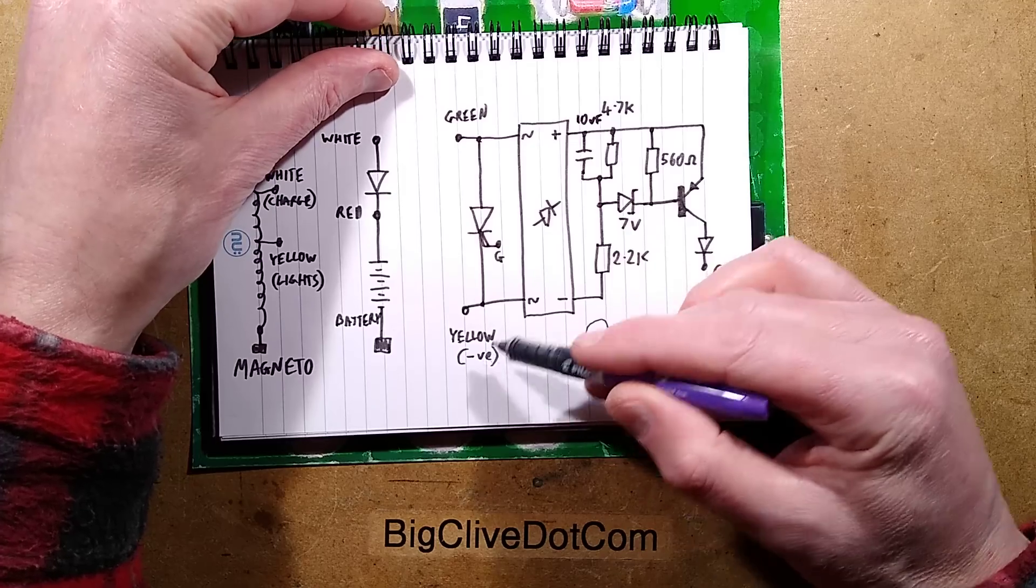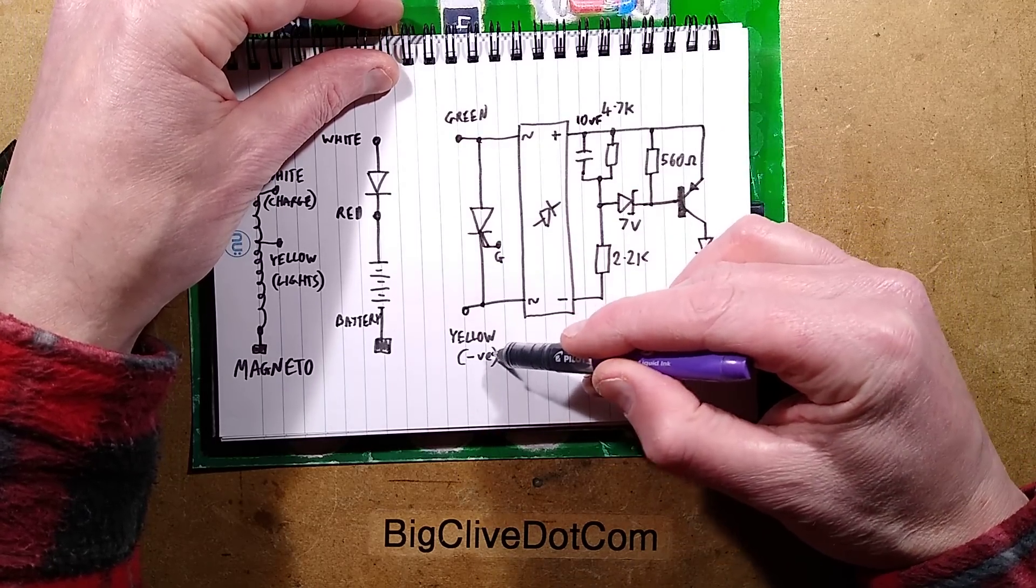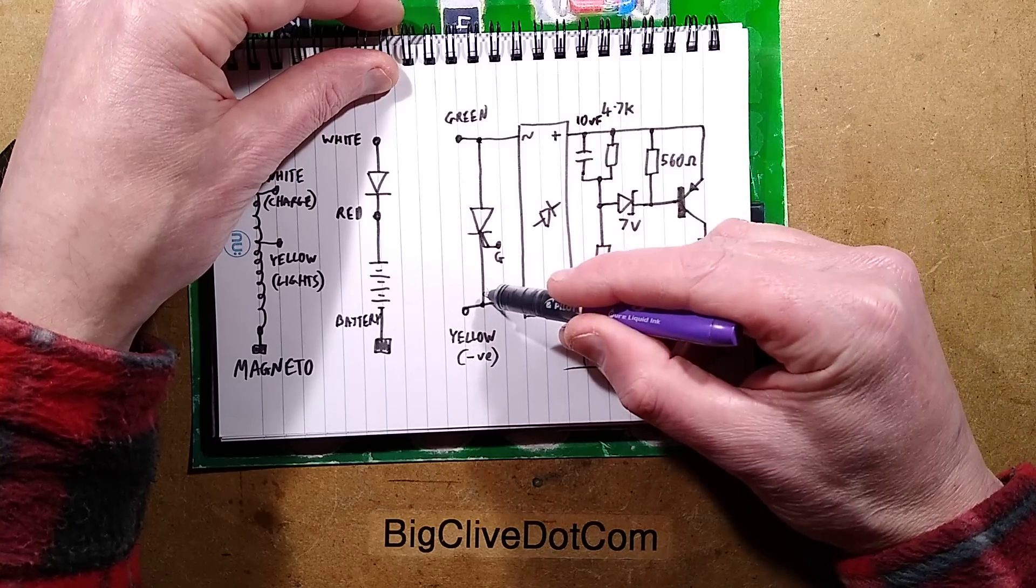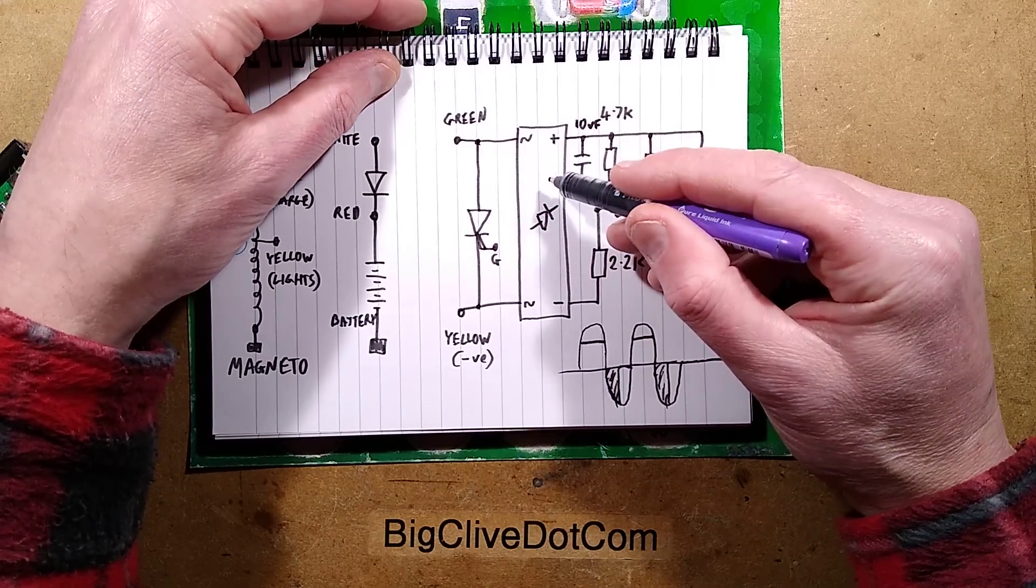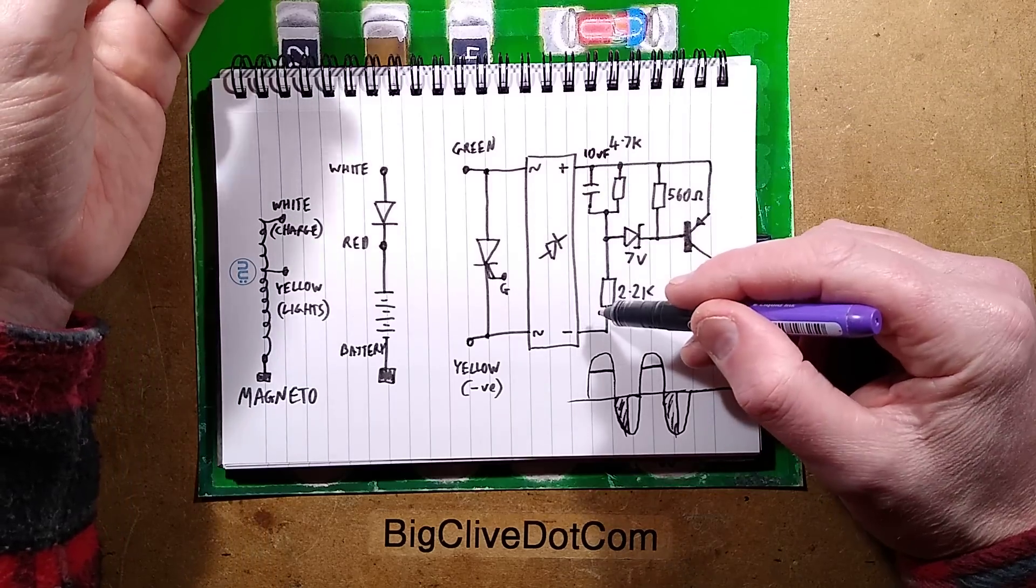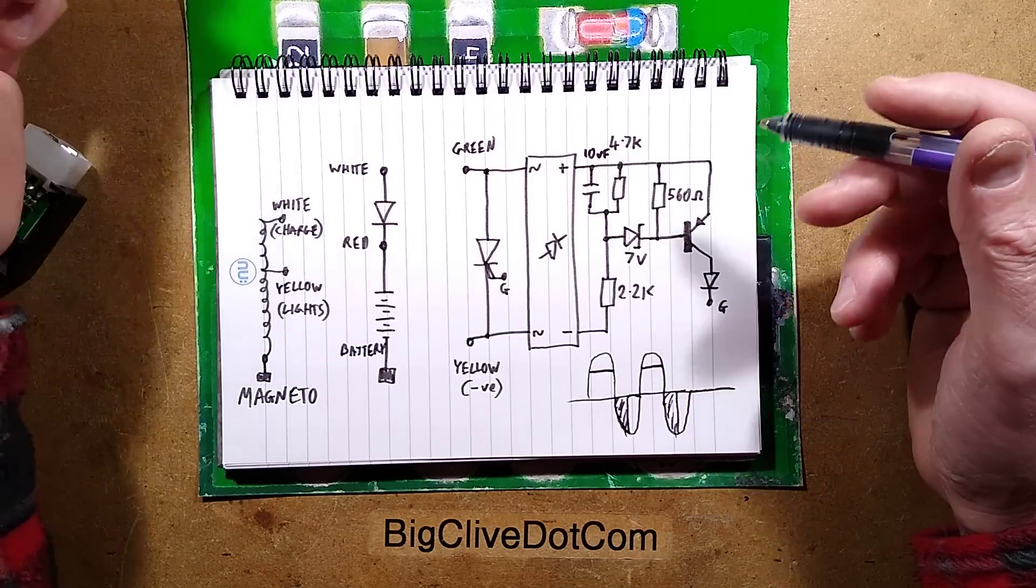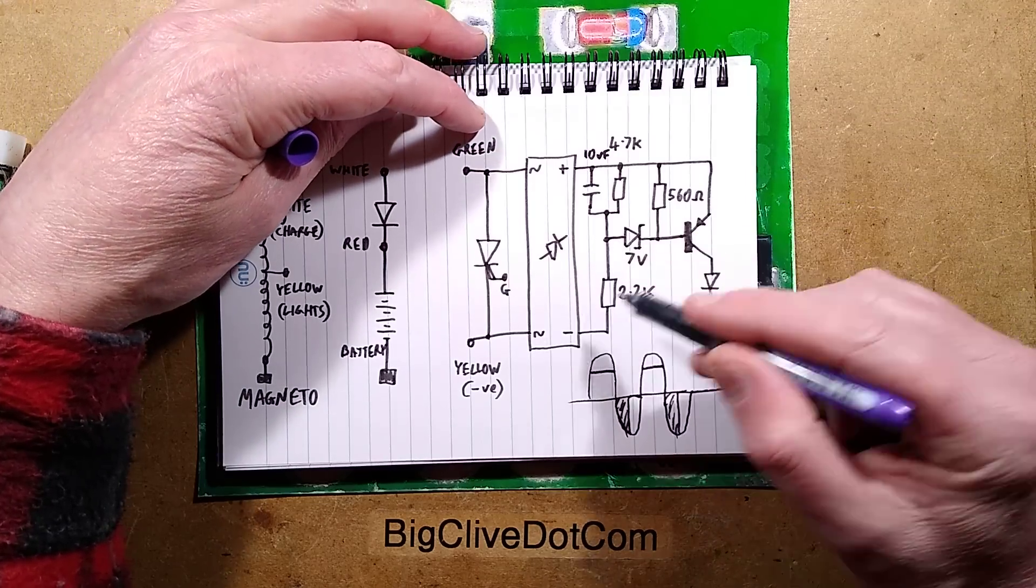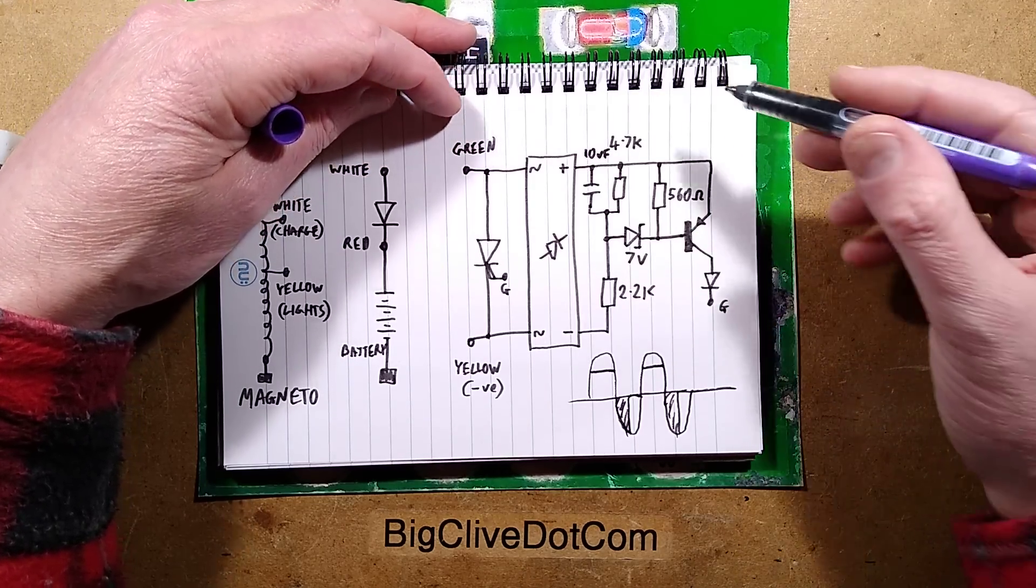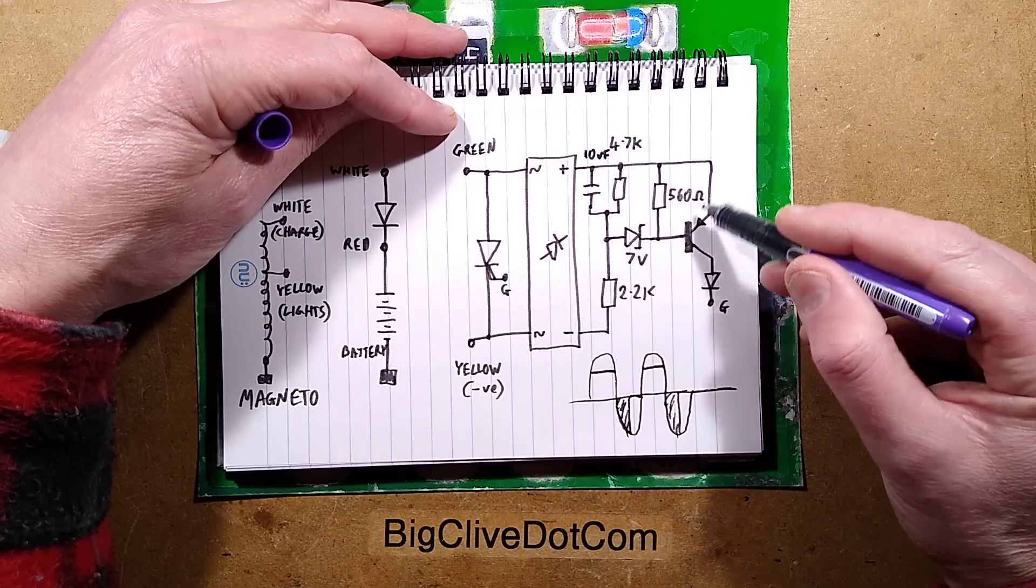The green and yellow have a thyristor across them because the yellow is going to be negative with respect to the chassis. It goes through a bridge rectifier, and I get the feeling that they've based this on other people's circuitry but then skimped and cut and modified. They're missing a trick here - I reckon they could have reduced the component count more. It's a very odd circuit.